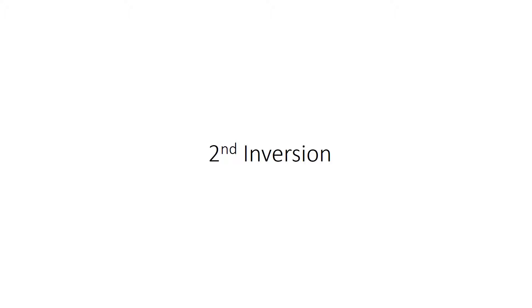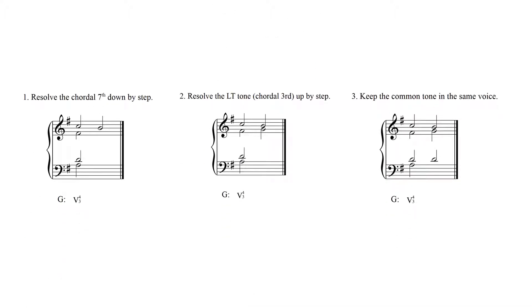Now let us follow the same steps with a second inversion dominant seventh chord. First, resolve the chordal seventh down by step. Again, in this example, the chordal seventh is the C in the soprano voice, and it is progressing down by step to the B.